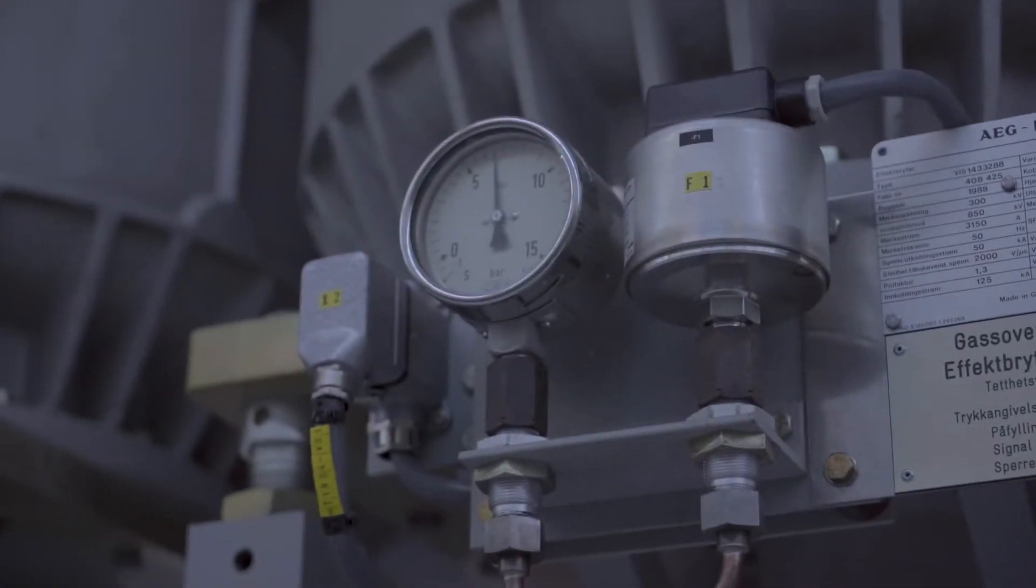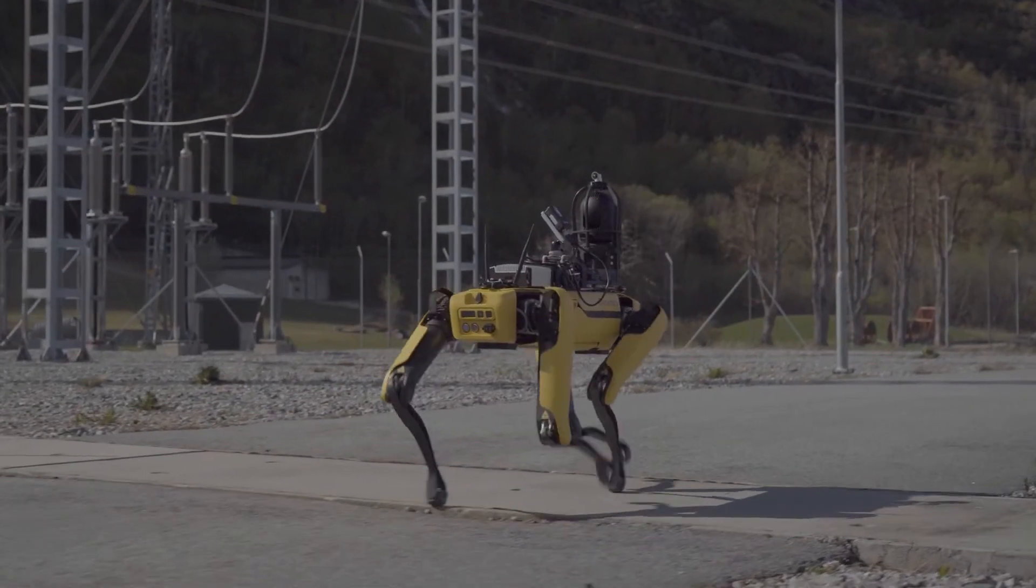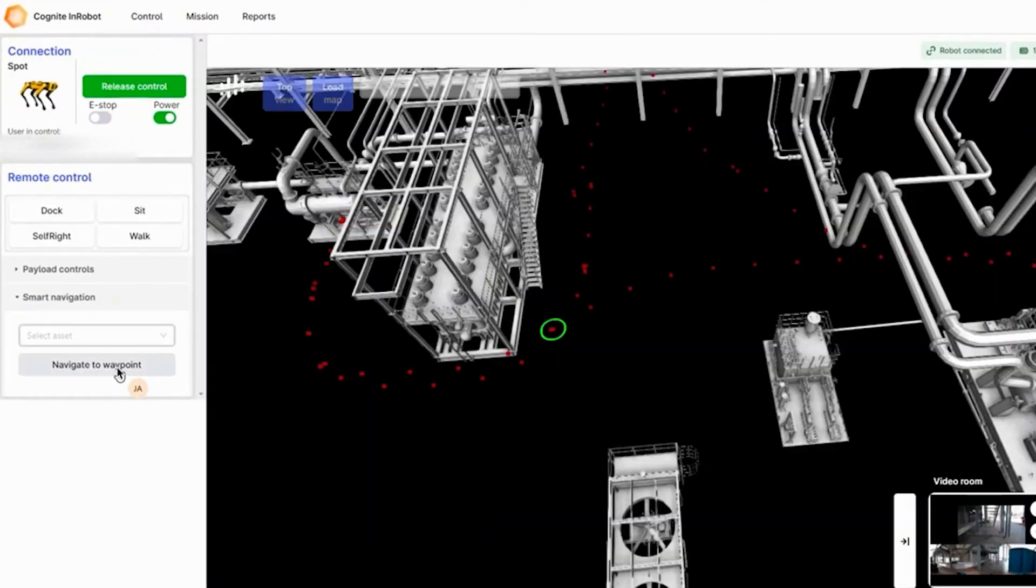The beauty of Cognit Data Fusion is that the more data it ingests, the more powerful it becomes. Robotics is the best way to make your digital twin trustworthy through continuous and accurate data enrichment.